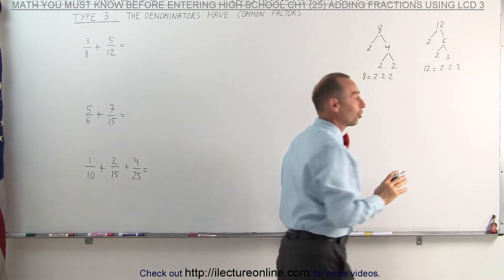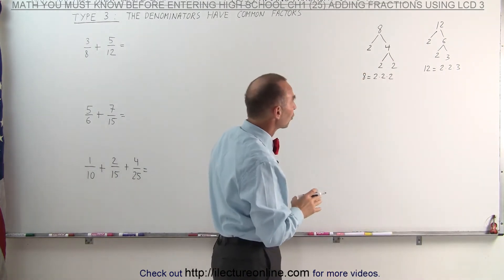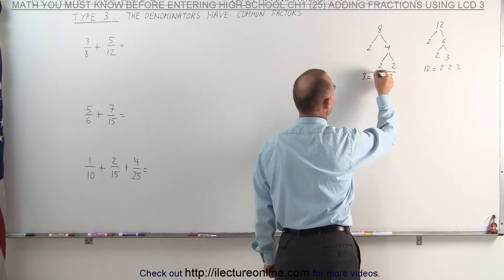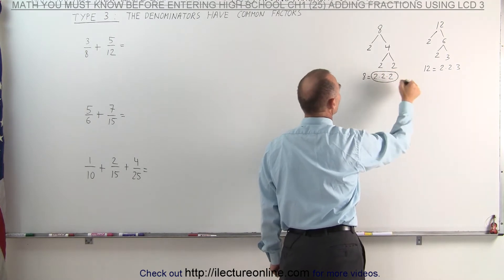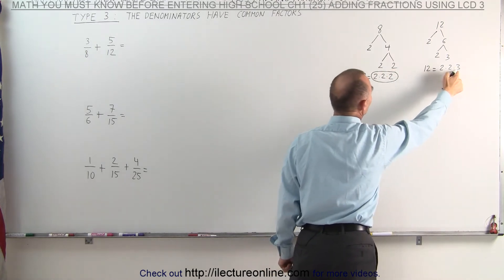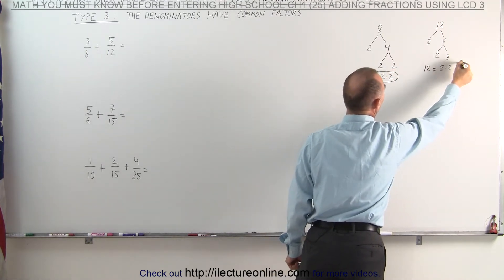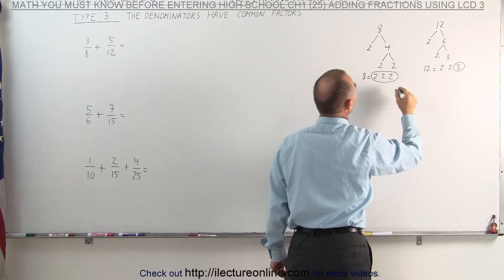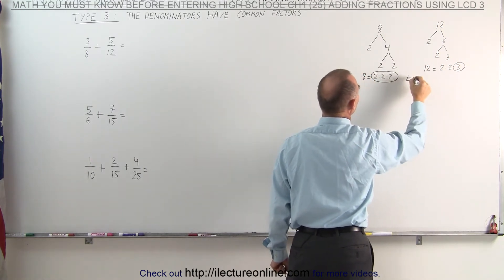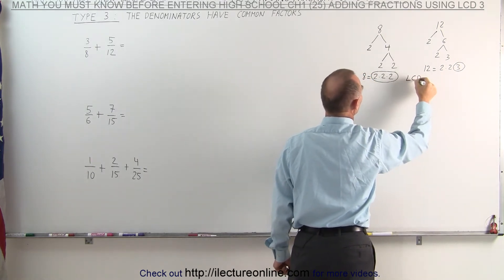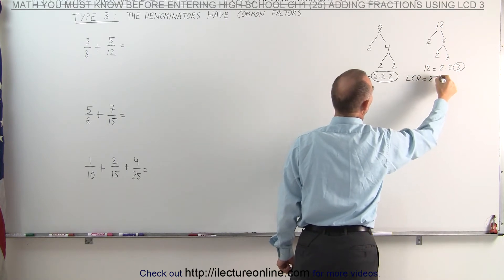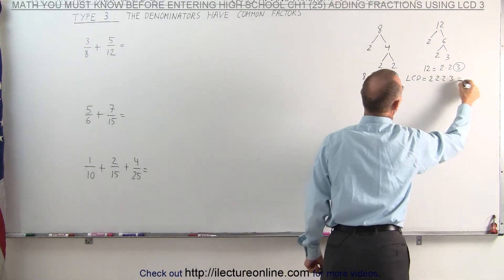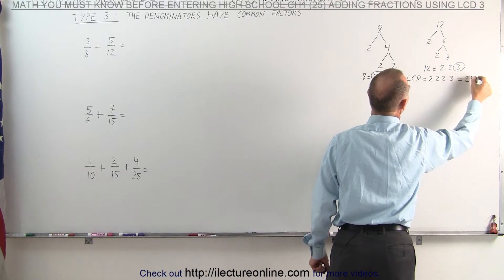Now we have to circle the prime factors which occur the most. Here the number 2 occurs 3 times, and in 12 it only occurs 2 times. And here we have the number 3 that occurs once — it doesn't occur at all in 8. So the lowest common denominator in the first example is equal to 2 times 2 times 2 times 3, which is equal to 24.